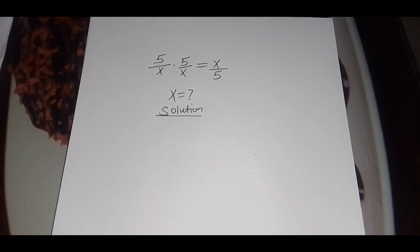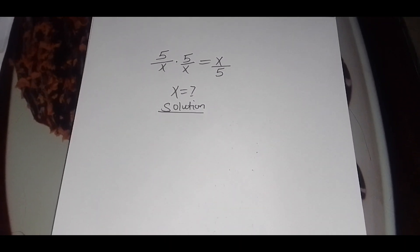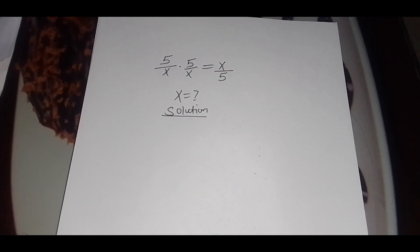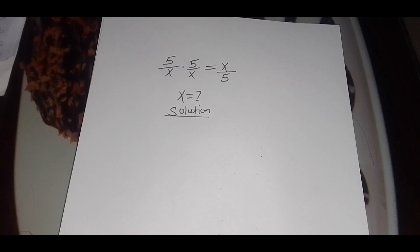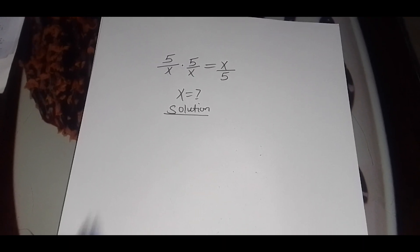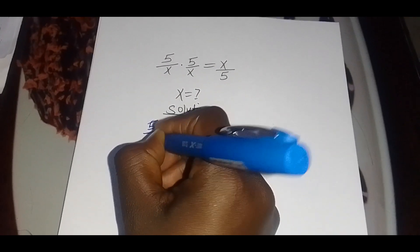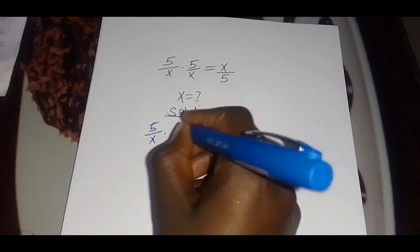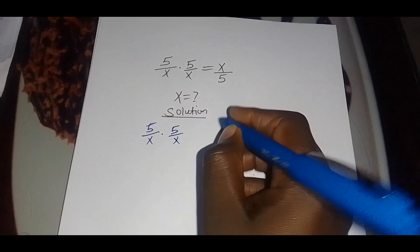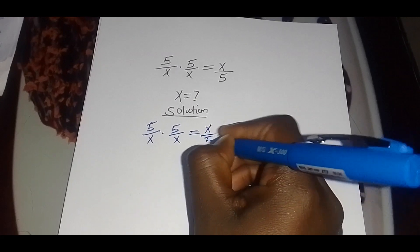Welcome back. We solve for the value of x given this math problem. We have 5 over x multiplied by 5 over x, and this is equal to x over 5. So what is the value of x? We have 5 divided by x multiplied by 5 divided by x, this is equal to x divided by 5.